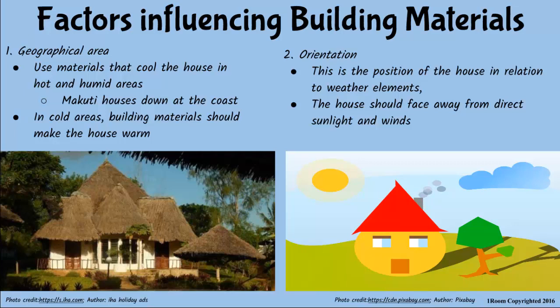Please explain. Okay. Take, for instance, houses down at the coast. Most of them are made of makuti or materials from coconut trees, considering the area is hot and humid. In very cold areas like the slopes of Mount Kenya, building materials that allow warmth in the house should be used. And in addition, you must consider the position of the house in relation to the direction of sunlight and wind.